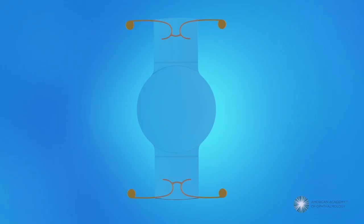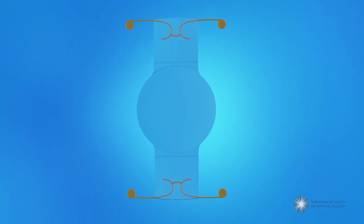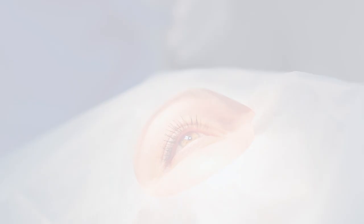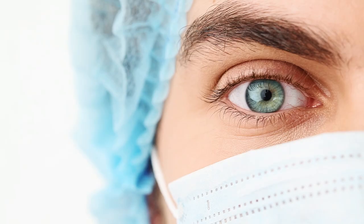A sixth type are accommodating IOLs. These IOLs are designed to mimic the natural focusing ability of the eye by moving forward and backward as your eye muscle contracts, allowing for a range of focus at different distances. However, this technology is older than the other technologies and is not as predictable in how well they function after the eye has healed from surgery.